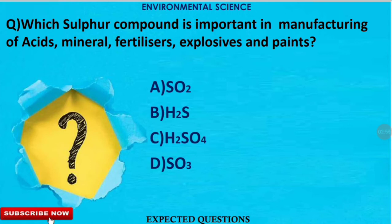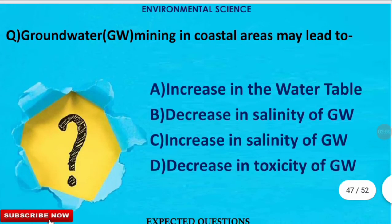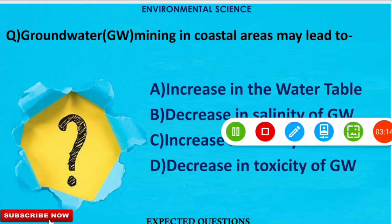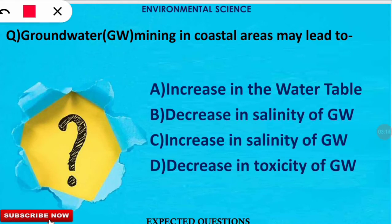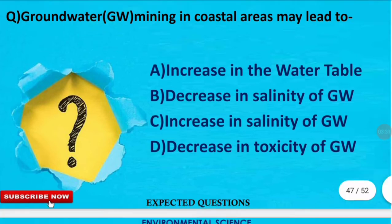The next question is about groundwater mining in coastal areas. Applying common sense, the answer is an increase in the salinity of groundwater, because being close to coastal areas, water from the coastal region moves towards the groundwater and makes it more salty.